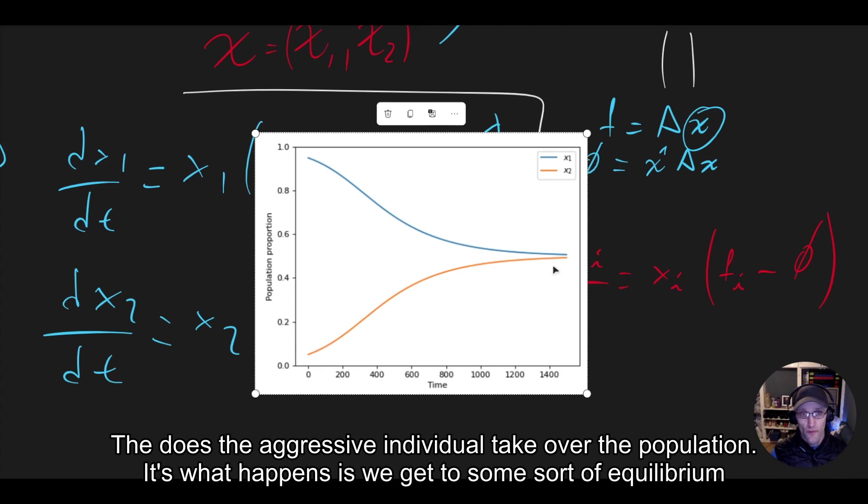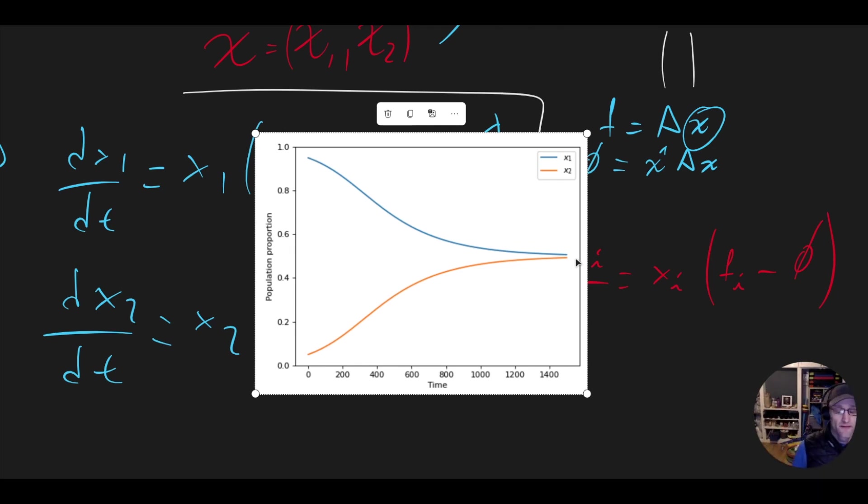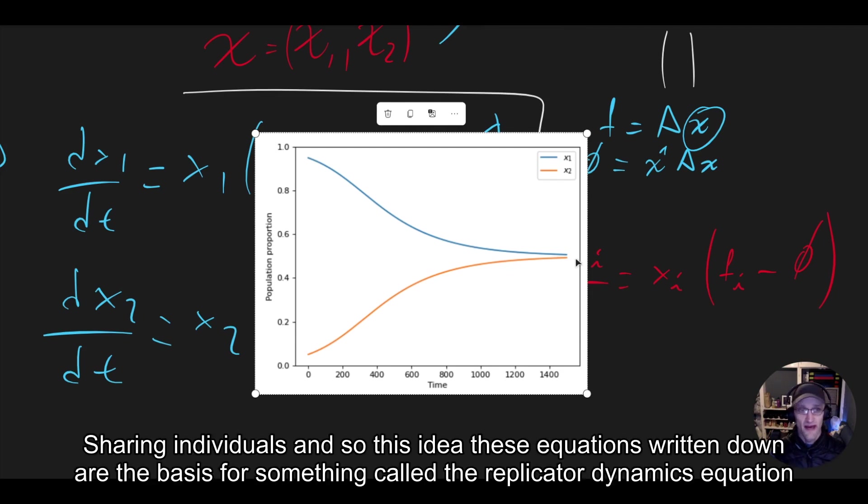What happens is we get to some sort of equilibrium where we're going to have a population of both aggressive and sharing individuals. And so this idea, these equations we've written down are the basis for something called the replicator dynamics equation.